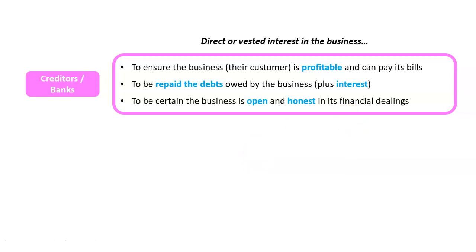Lastly, they want to be certain that the business is open and honest in its financial dealings. For example, when a bank asks a business for information about its assets as part of a loan application, they want the business to be open and honest and not lie.